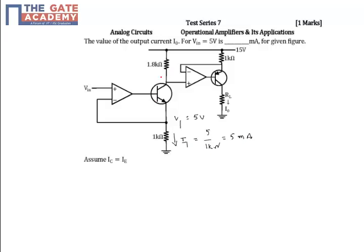Once you know this 5 milliamperes, the same current will flow here and here as I1, because we know that the op-amp offers very high impedance. So no current will flow through the op-amp, 0 amps.